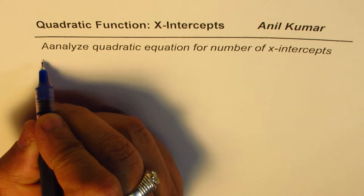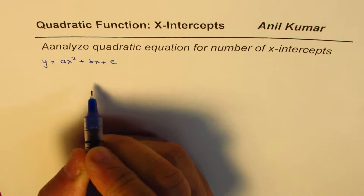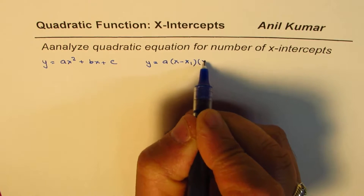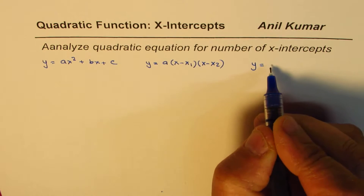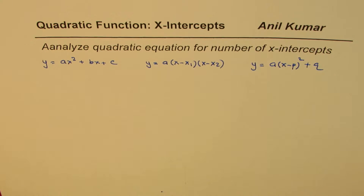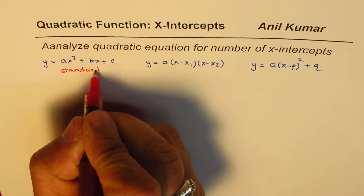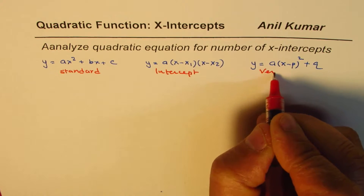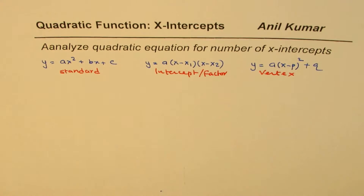Quadratic functions can be given in three different forms: y = ax² + bx + c, which is the standard form; y = a(x - x₁)(x - x₂), which is the intercept or factored form; and y = a(x - p)² + q, which is the vertex form.